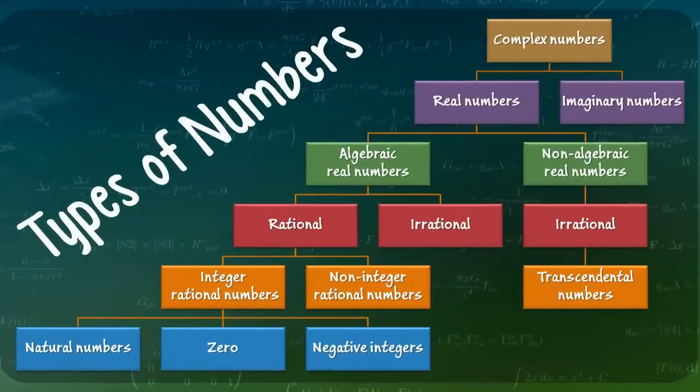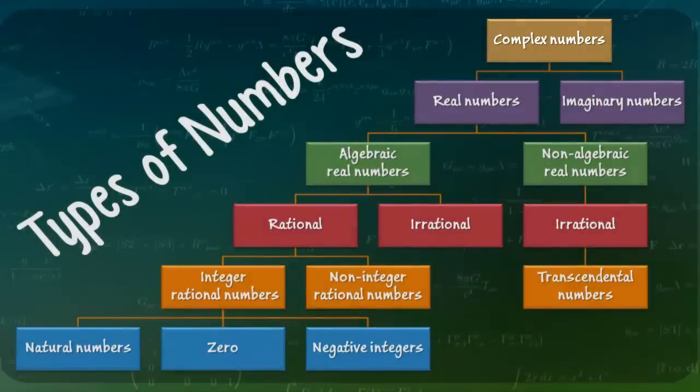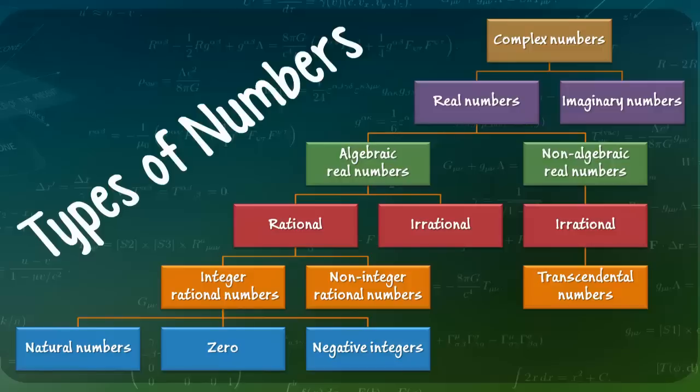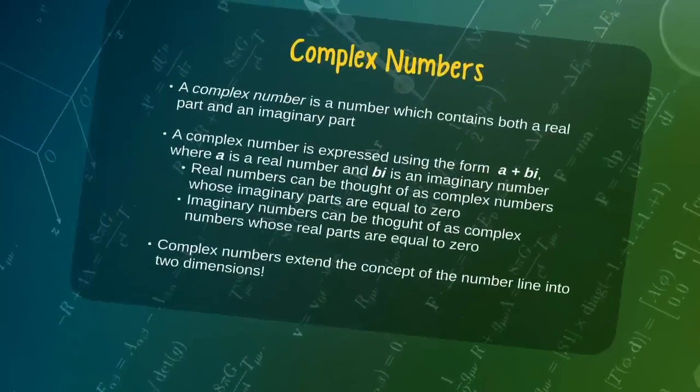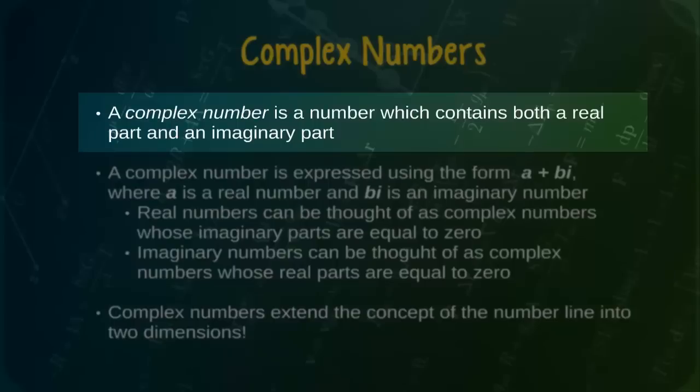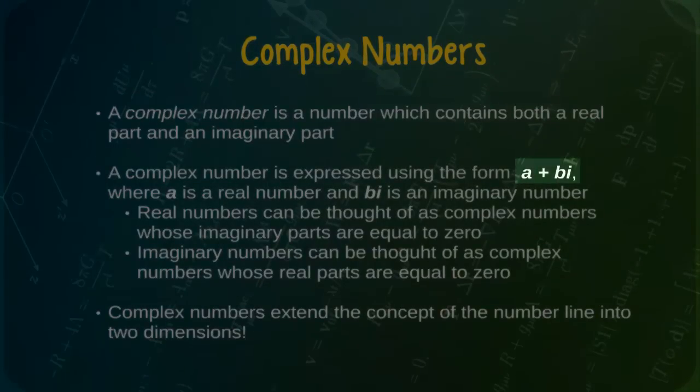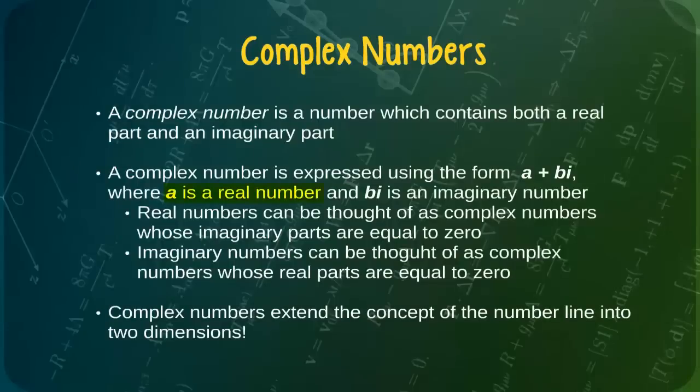Finally, at the highest level of our hierarchy, we find complex numbers. Both real numbers and imaginary numbers are each just a subtype or special case of the complex numbers. A complex number is a number which contains both a real part and an imaginary part. Complex numbers are commonly expressed using the form a plus bi, where a is a real number and bi is an imaginary number.